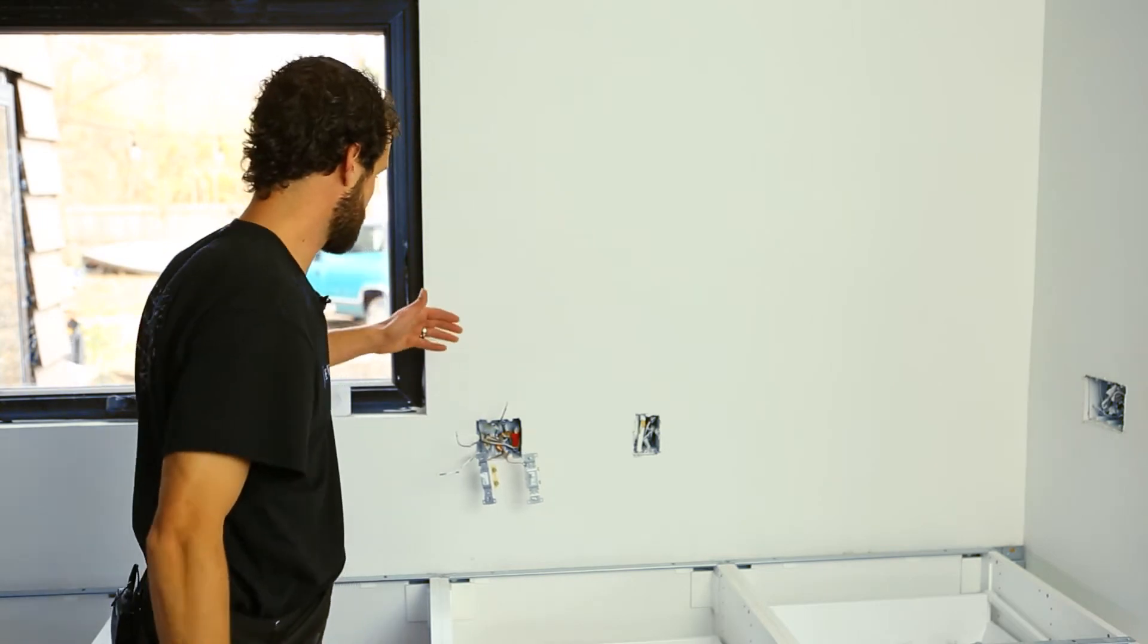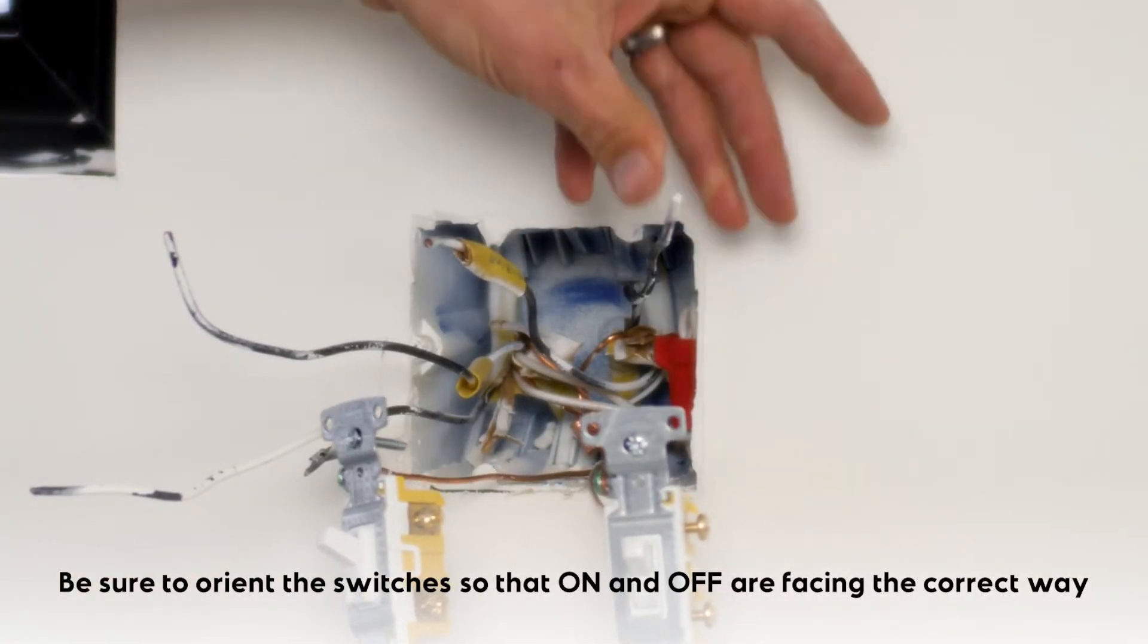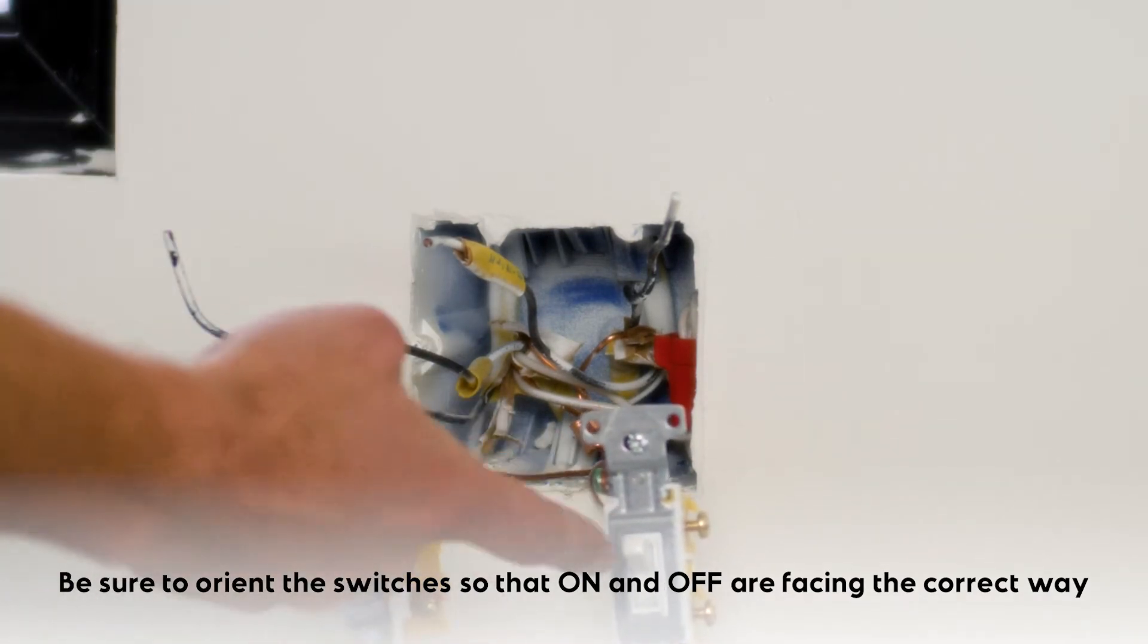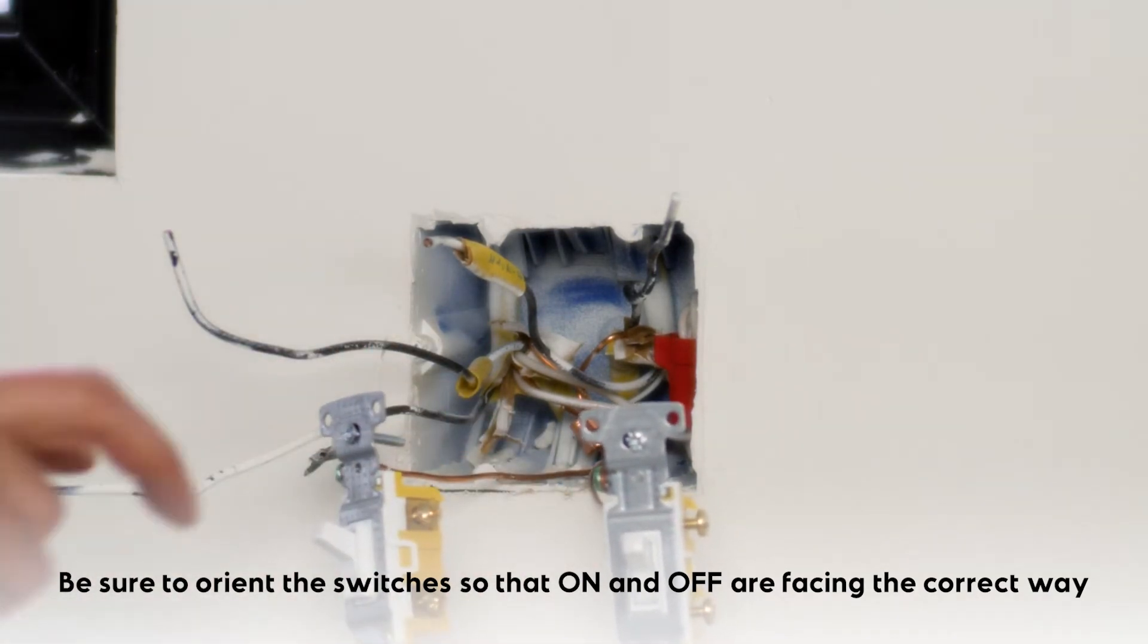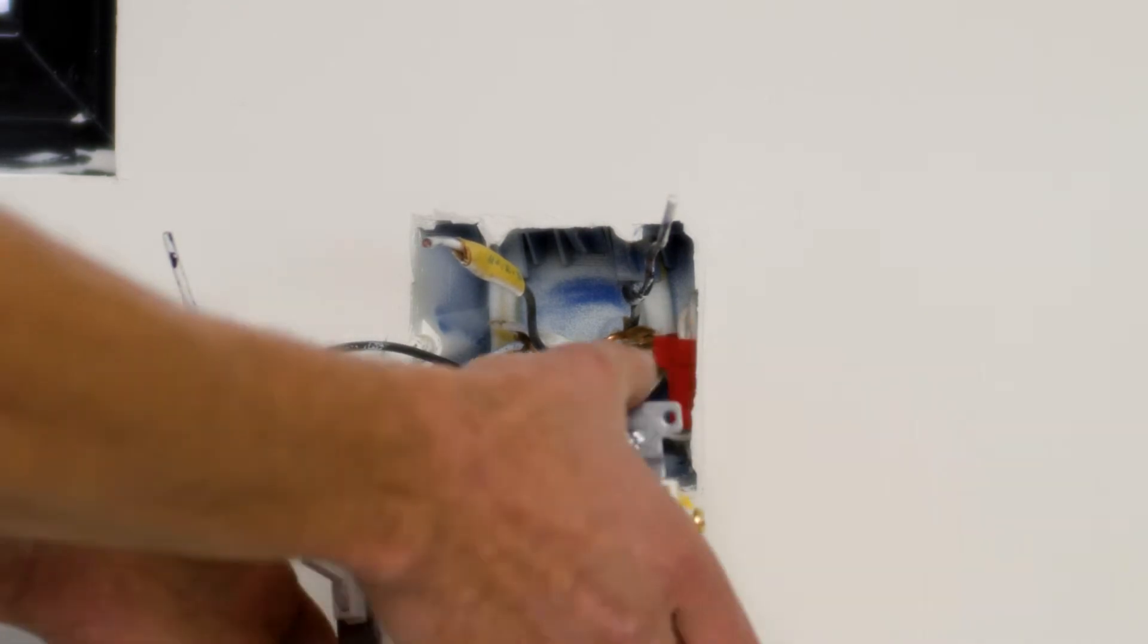And now I'm terminating my conductors, my hot conductors. And so I've got switch leg number one. In this case, there's not a right or wrong about which switch I put the sink light on and which switch I put the disposal on. But I'm personally going to choose to make my sink light my second switch.